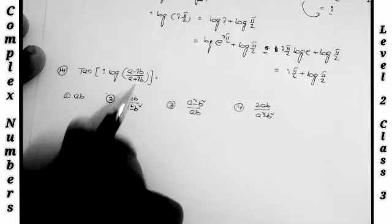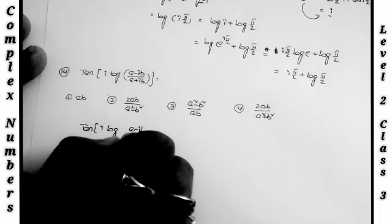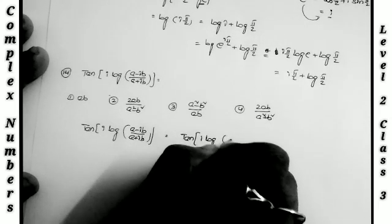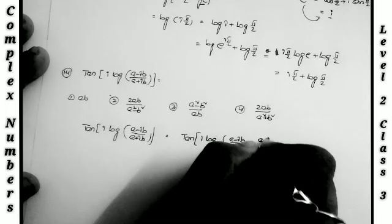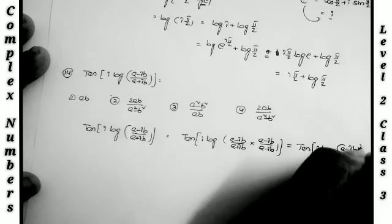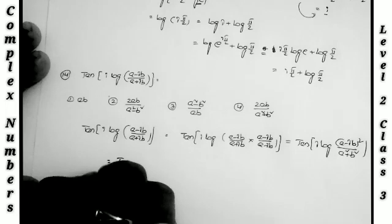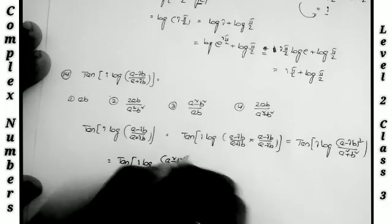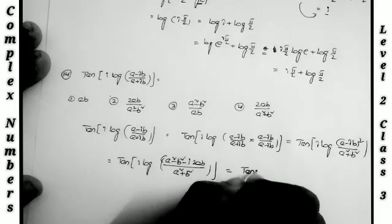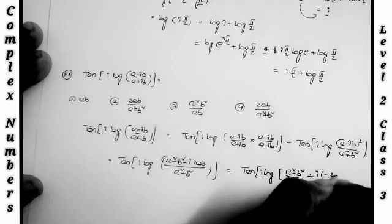Next: find tan(i·log((a - ib)/(a + ib))). Rationalizing by multiplying numerator and denominator by (a - ib): tan(i·log((a - ib)²/(a² + b²))). Expanding the numerator: (a - ib)² = a² - b² - 2abi. So this becomes tan(i·log[(a² - b²)/(a² + b²) + i·(-2ab)/(a² + b²)]).